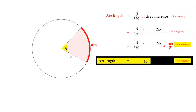Once we've done that, things cancel out quite neatly: we've got π on the top and π on the bottom, and 2 times 180 on the top with 360 on the bottom, so they all cancel each other out. It just leaves you with arc length equals theta times r. So if we've been given the angle theta in radians, then the length of an arc is just theta times the radius — which is pretty neat because it eliminates the need for using π.